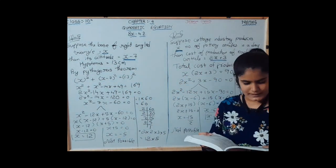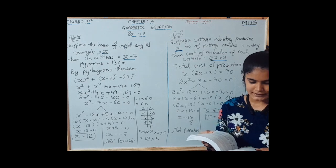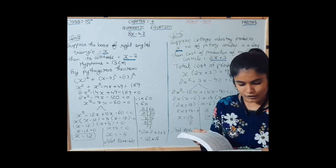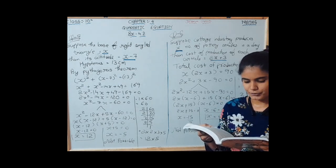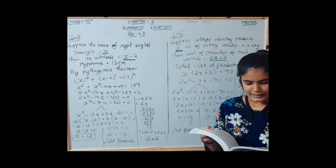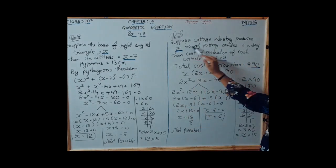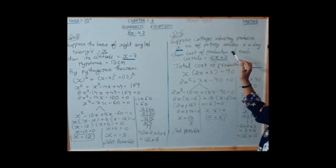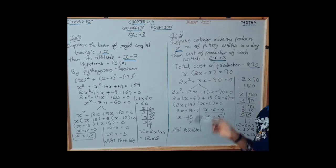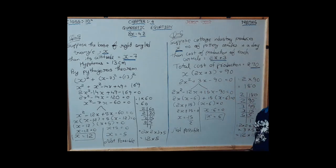Moving to question number 6: a cottage industry produces a certain number of pottery articles in a day. The cost of production of each article was 3 more than twice the number of articles produced that day. The total cost of production was 90 rupees. Suppose the industry produces x pottery articles in a day, then the cost per article is 2x plus 3, and x into 2x plus 3 equals 90.